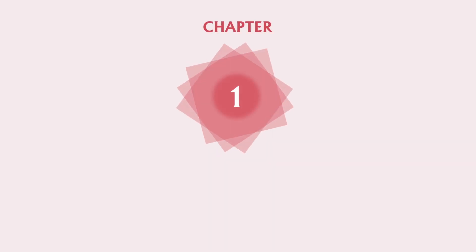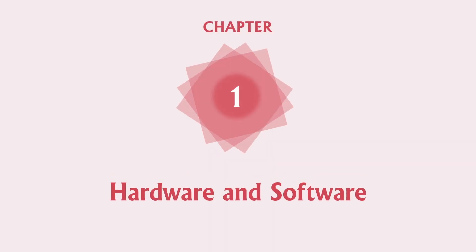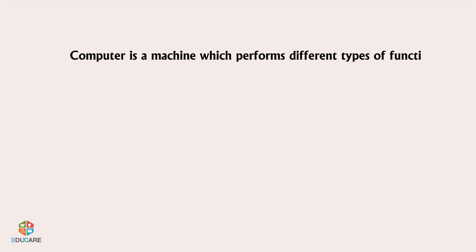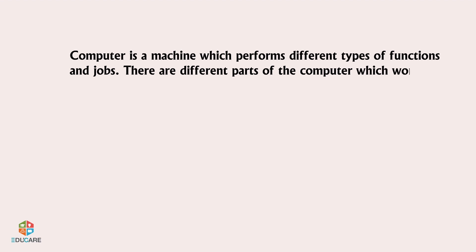Chapter 1: Hardware and Software. A computer is a machine which performs different types of functions and jobs. There are different parts of the computer which work together for forming a computer system.